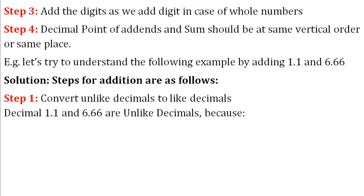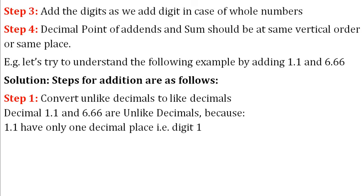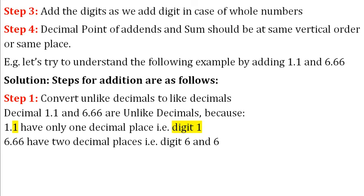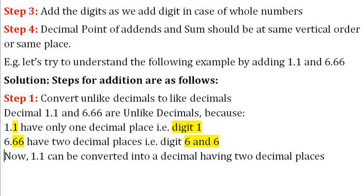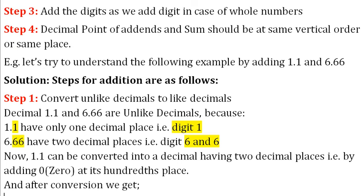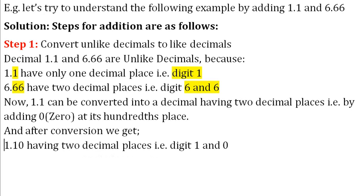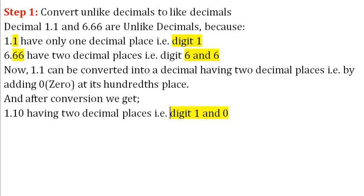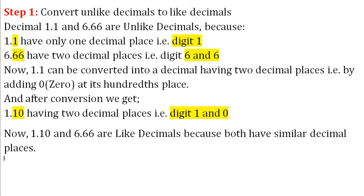Decimals 1.1 and 6.66 are unlike decimals because 1.1 has only one decimal place, that is digit 1, while 6.66 has two decimal places, that is digits 6 and 6. Now 1.1 can be converted into a decimal having two decimal places by adding 0 at its hundredths place, giving us 1.10. Now 1.10 and 6.66 are like decimals because both have the same number of decimal places.